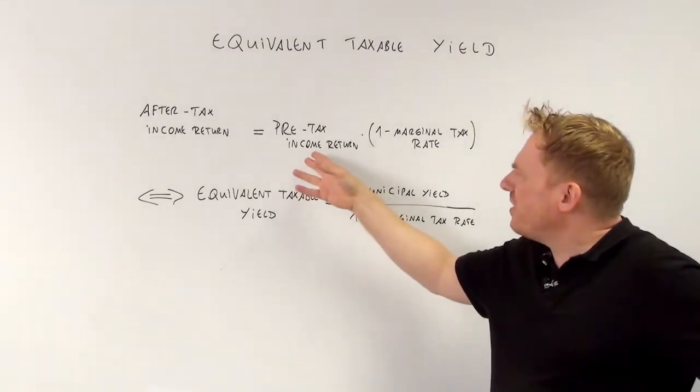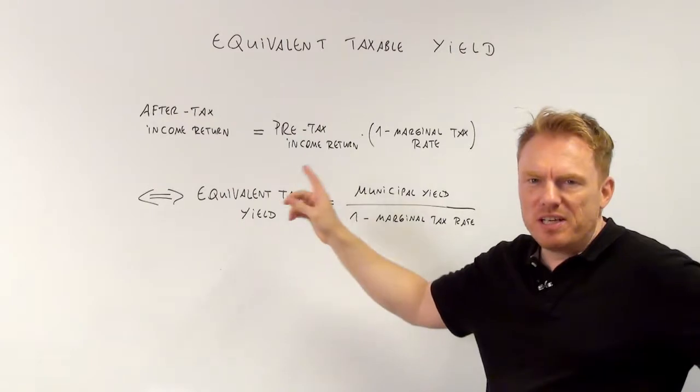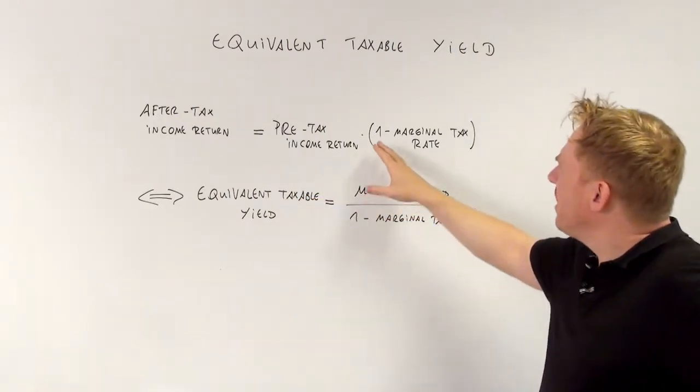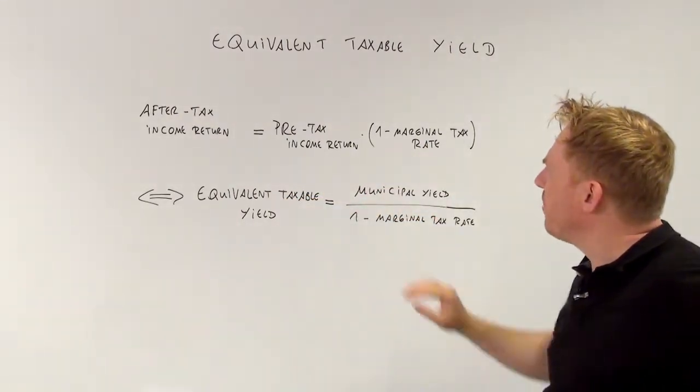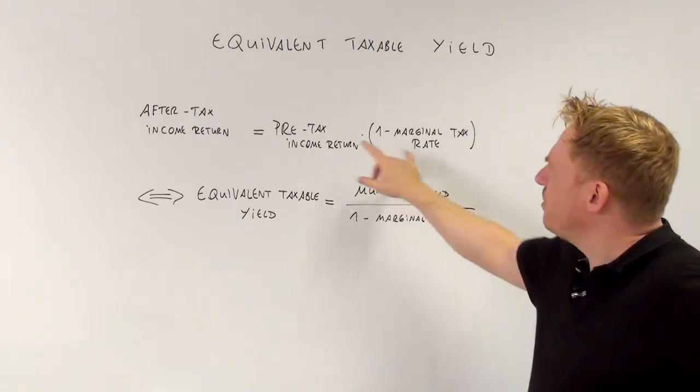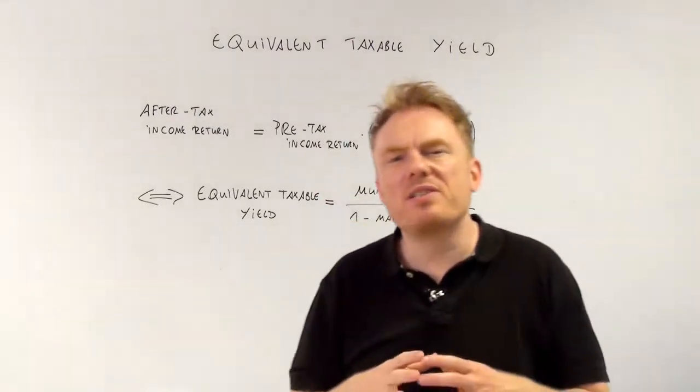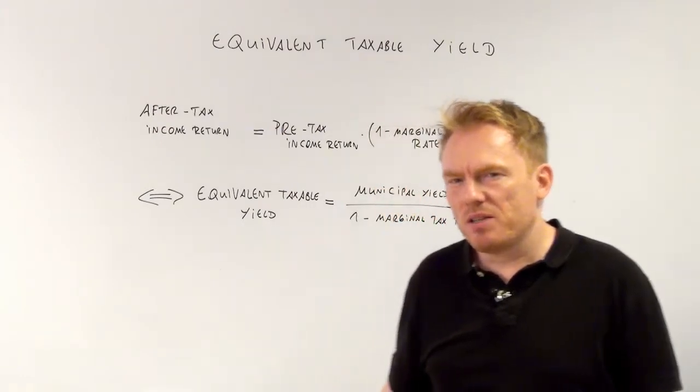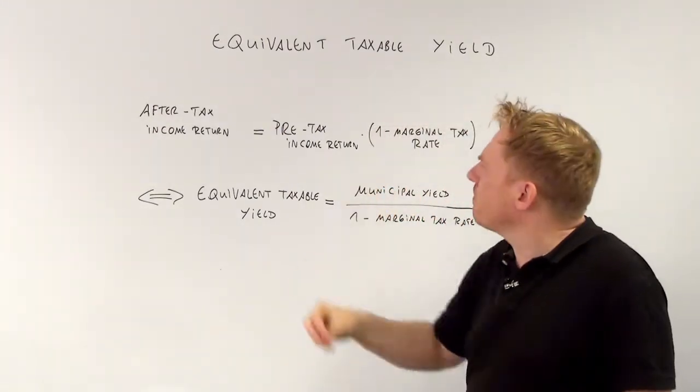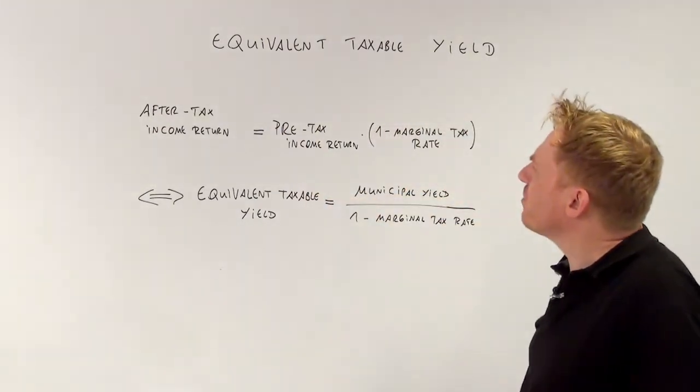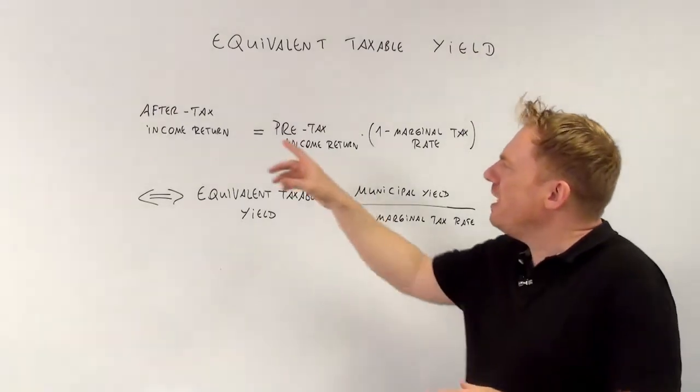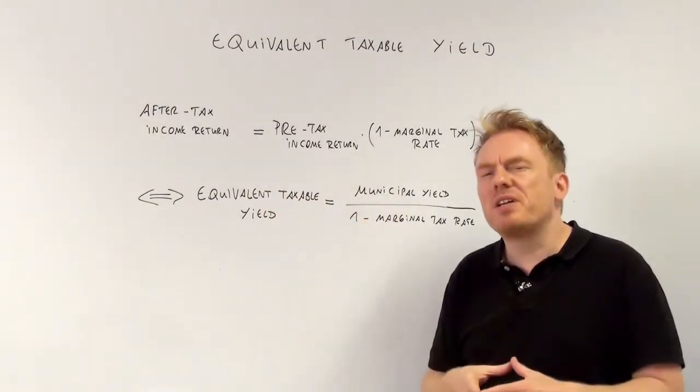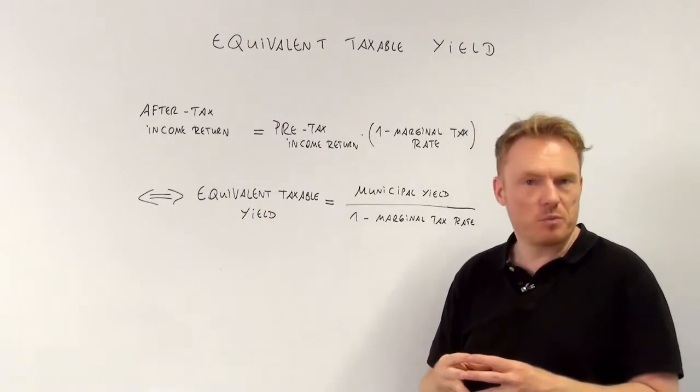Say 6%. 6% pre-tax multiplied by 1 minus 0.4 is 0.6. 0.6 multiplied by 6% is 3.6%. So a 6% pre-tax income return is equal to 3.6% after-tax income return.